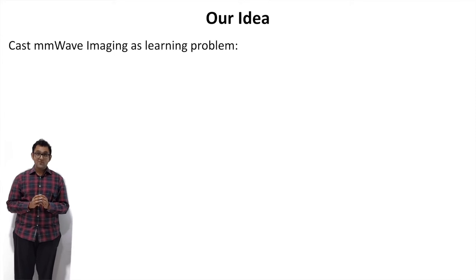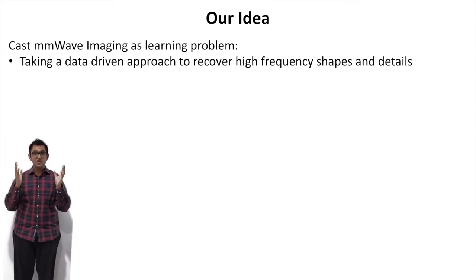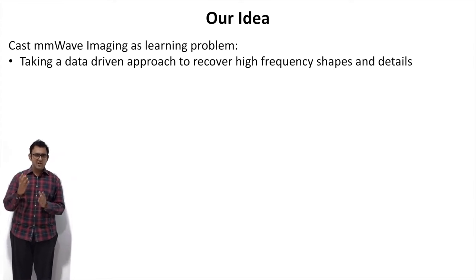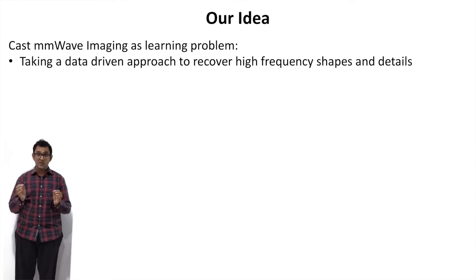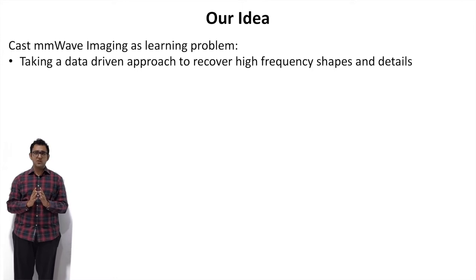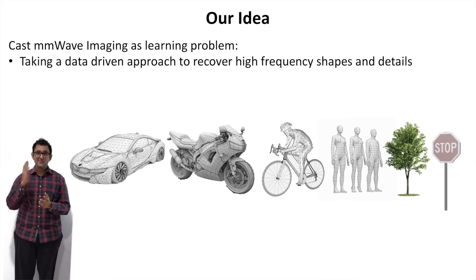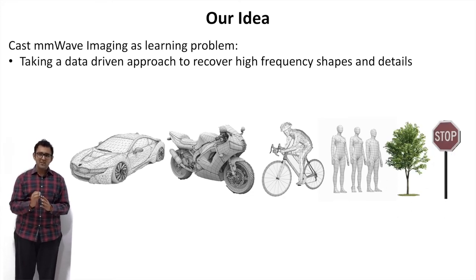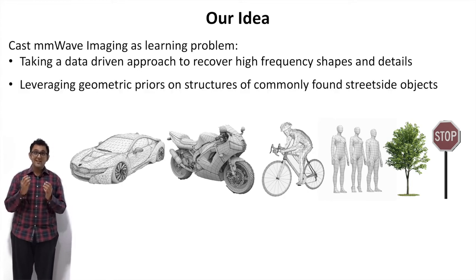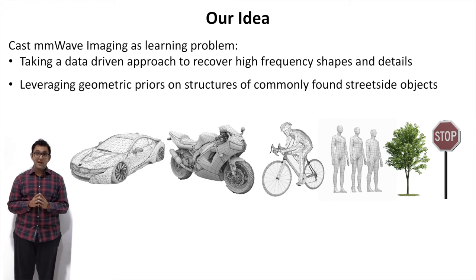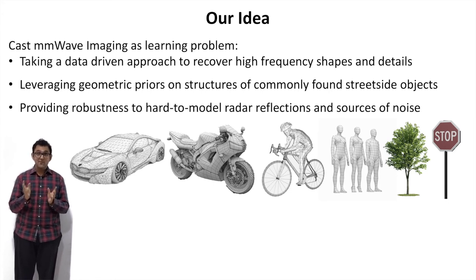So here is our idea: we will cast this problem as a learning problem. We take a data-driven approach that would allow us to recover high-frequency shapes and details in the scene. Our intuition is that although the radar reflections are hard to interpret, the environment around the car is very well structured and predictable. A car has to look like a car — it cannot look like a dolphin. Other objects such as bikes, pedestrians, and traffic infrastructure all come in very typical and predictable shapes. A data-driven approach can leverage these geometric priors to accurately reconstruct the scene from a low-resolution radar input, fill in gaps due to specularity, and remove artifacts introduced by multipath.